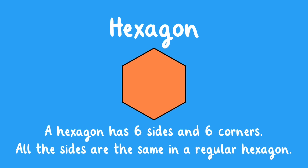Hexagon. A hexagon has six sides and six corners. All the sides are the same in a regular hexagon.